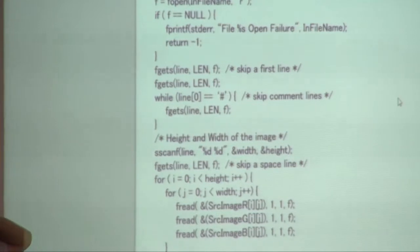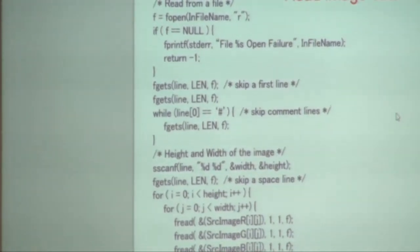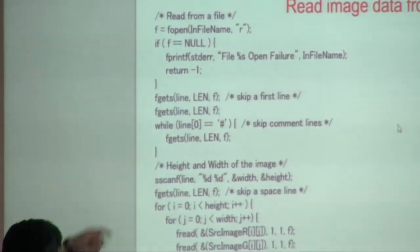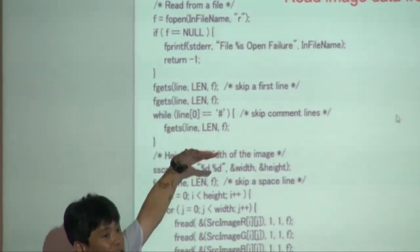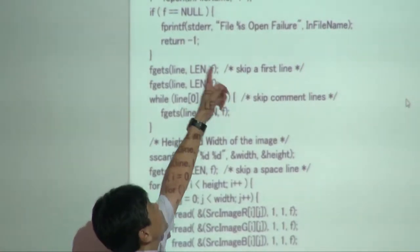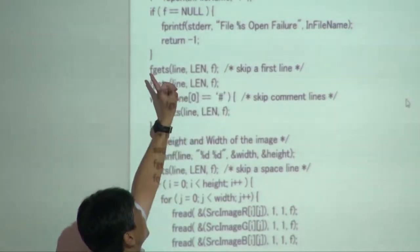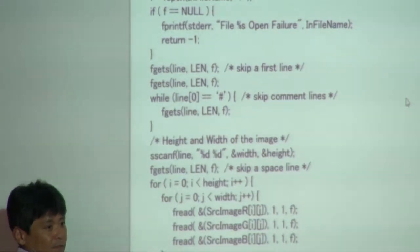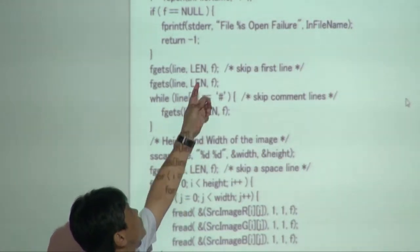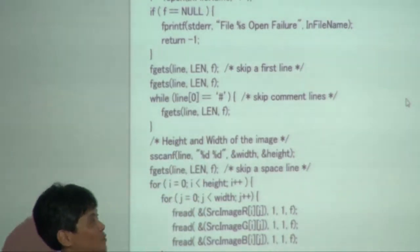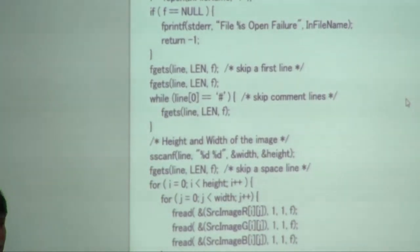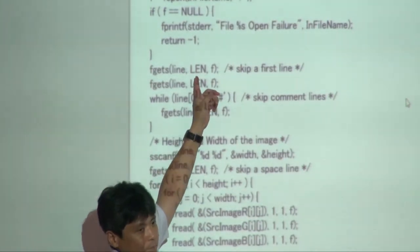Using the fopen function, you make a file pointer for reading, specifying the reading file name. Using the fgets function, you can read each line from the file pointer. The line is stored in the string character array, and the maximum size is specified by the length variable.